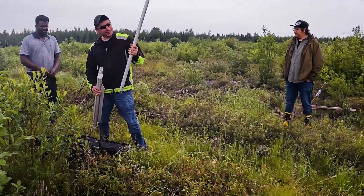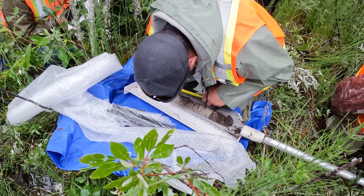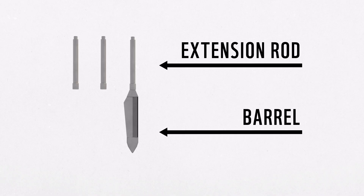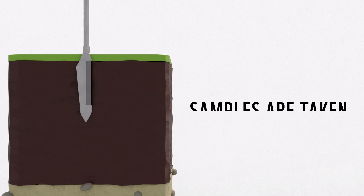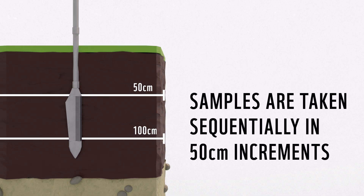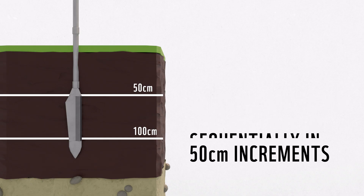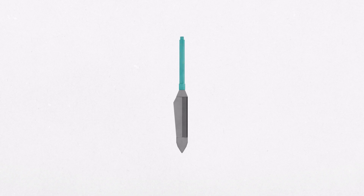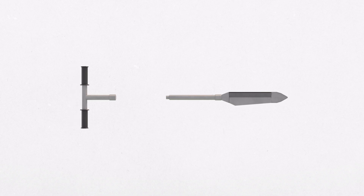Before coring, find a flat area close to the coring spot, lay down a tarp, and prepare all the required equipment. To assemble the corer, attach a minimum of one extension rod to the barrel, either by screwing it in or securing it with a pin. The number of extensions required depends on the depth of peat being sampled. The samples are taken sequentially in 50 cm increments — so the first would be to a depth of 50 cm, the second to 100 cm, and so on. This is done until you can no longer push the corer any further, which indicates you have reached clay, rock, or any other object obstructing the core. For the purpose of this tutorial, we will only show coring with one extension rod. Lastly, attach the handle to the top of the corer.